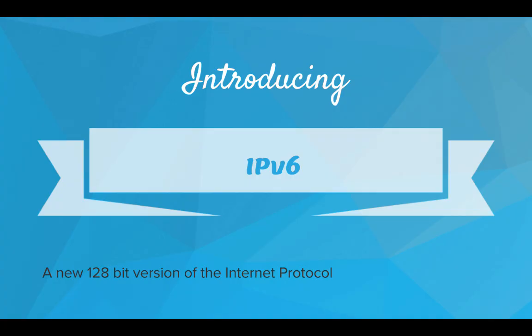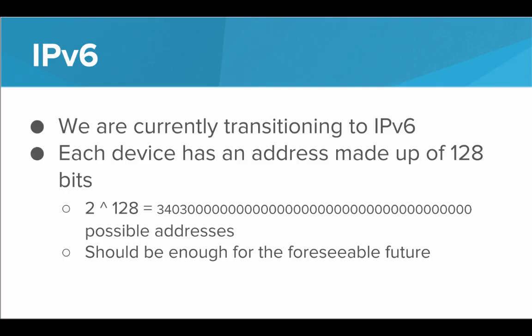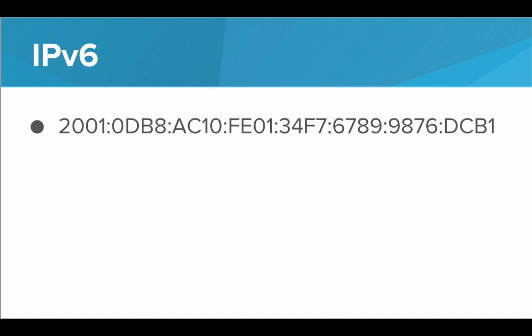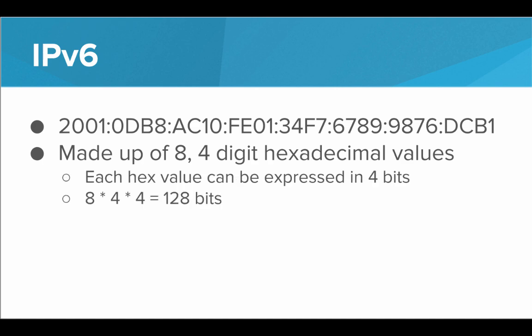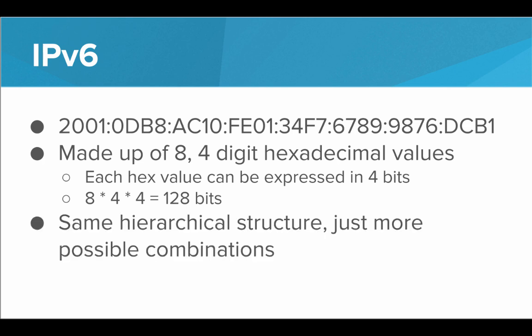Introducing IPv6. IPv6 is a new 128-bit version of the internet protocol. We are currently in the middle of transitioning all of our IP addresses from IPv4 to IPv6. In IPv6, each device has an address made up of 128 bits — that means we have 2 to the 128 possible addresses, which should absolutely be enough for the foreseeable future. An IPv6 address has 8 hexadecimal numbers made up of 4 hexadecimal digits each. Since each hex value can be expressed using 4 bits, that's 8 numbers times 4 digits times 4 bits per digit, which equals 128 bits. IPv6 has the same hierarchical structure as IPv4, just with way more possible combinations.